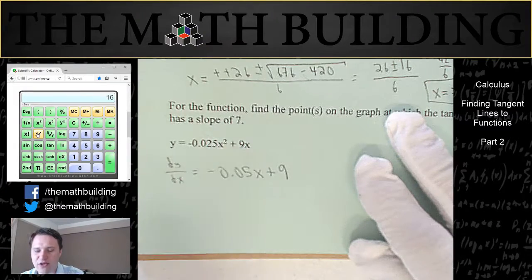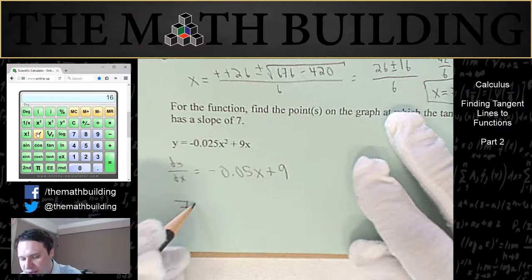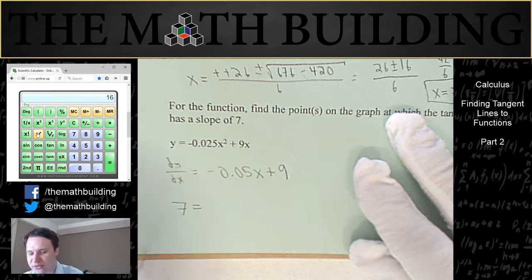This time they want to know where does the graph have a derivative of 7. So that's the value that we plug in for dy dx. We want to know when is the slope equal to 7.